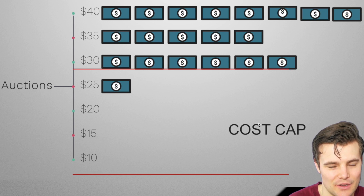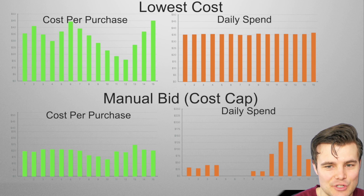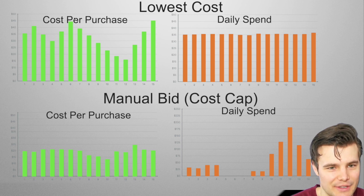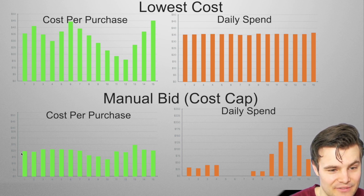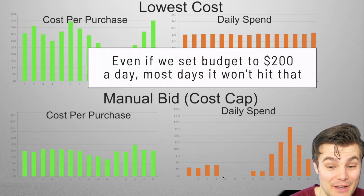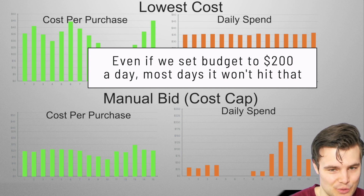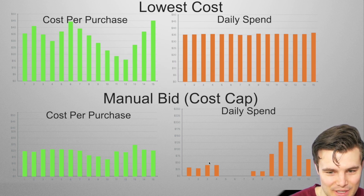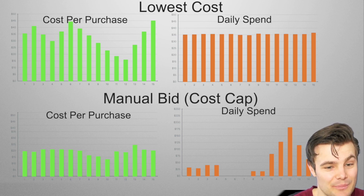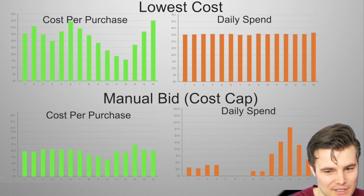Over time, lowest cost spends the same amount every day regardless of market competitiveness, so your cost per purchase fluctuates a lot — good days are great, bad days are really poor. With manual bidding like cost cap set at $20, your cost per purchase stays relatively close to $20. On super competitive days you may spend nothing; on good days with cheap auctions you'll hit your full spend. You could set a budget of $200, but most days you'll only hit a fraction because it picks off uncompetitive auctions up to $20 and then stops.